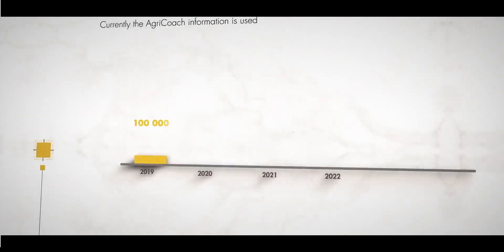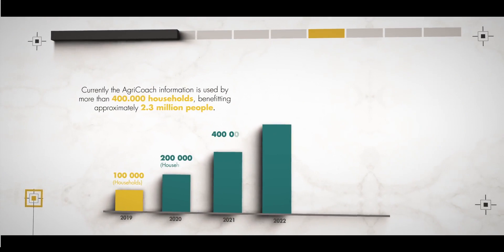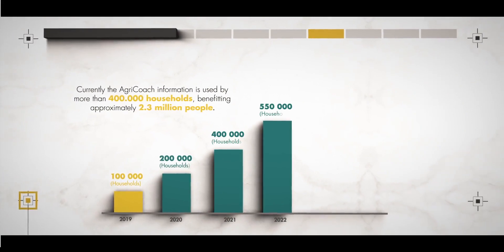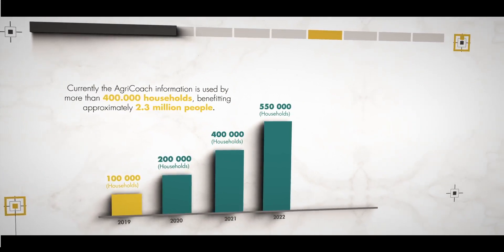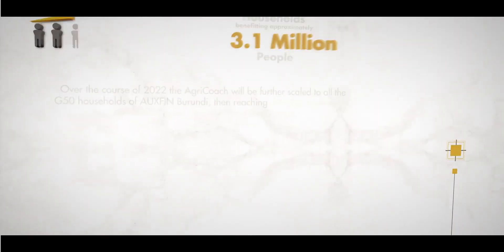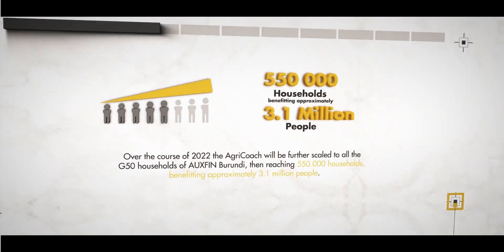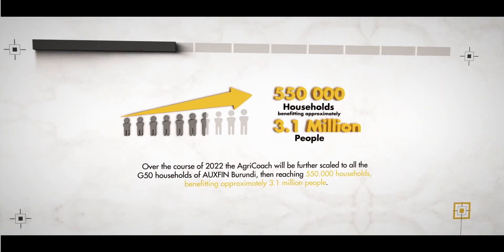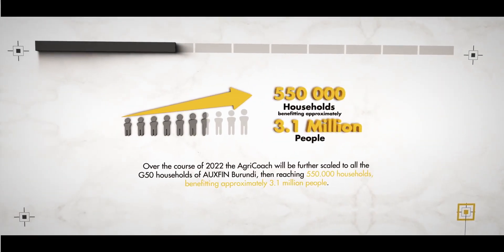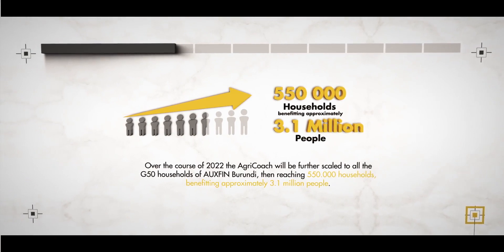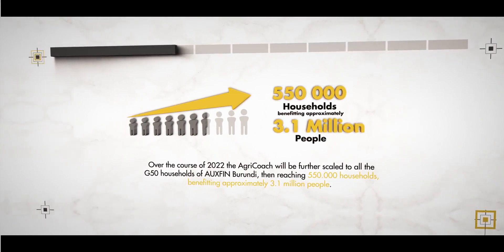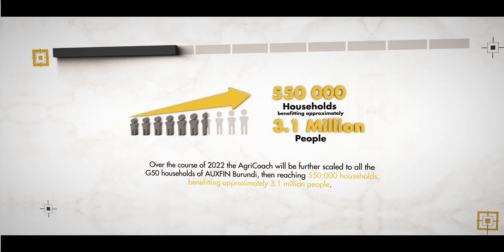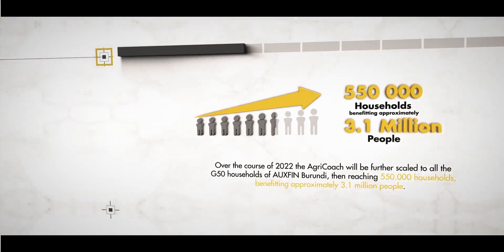Currently, the AgriCoach application is used by more than 400,000 households, benefiting approximately 2.3 million people. Over the course of 2022, AgriCoach will be further scaled to all G50 households of Oxfine Burundi, reaching 550,000 households and benefiting approximately 3.1 million people.